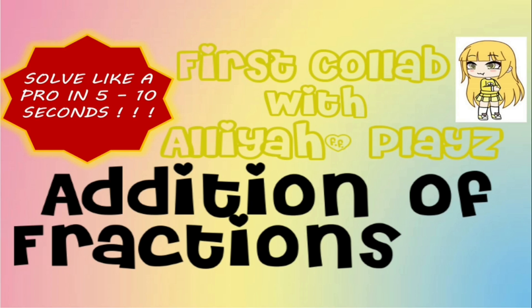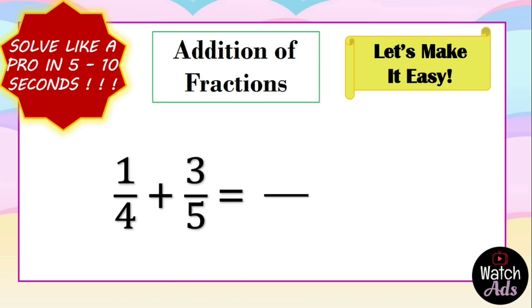This video is all about addition of fractions. We have 1/4 plus 3/5. First examine the fractions - these fractions are dissimilar fractions. Dissimilar fractions are fractions with different denominators. To add dissimilar fractions, first we multiply the denominators.